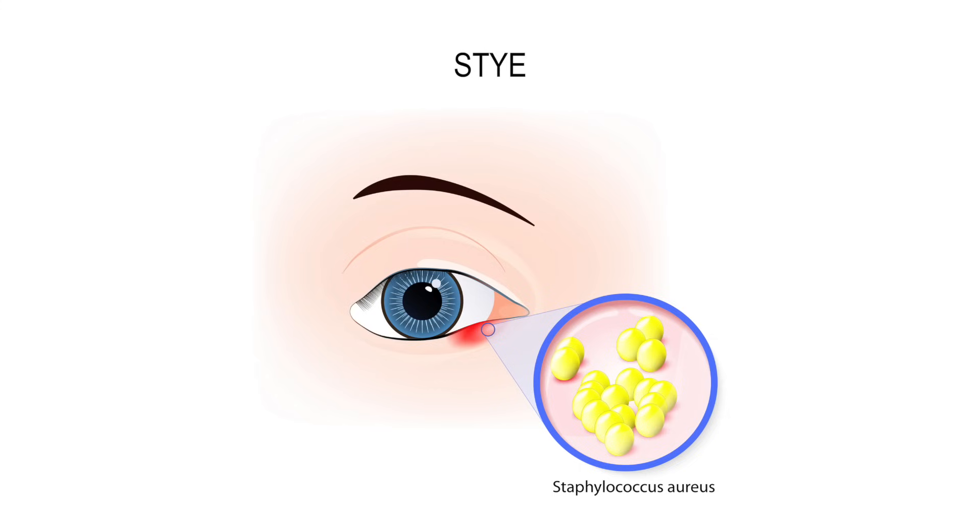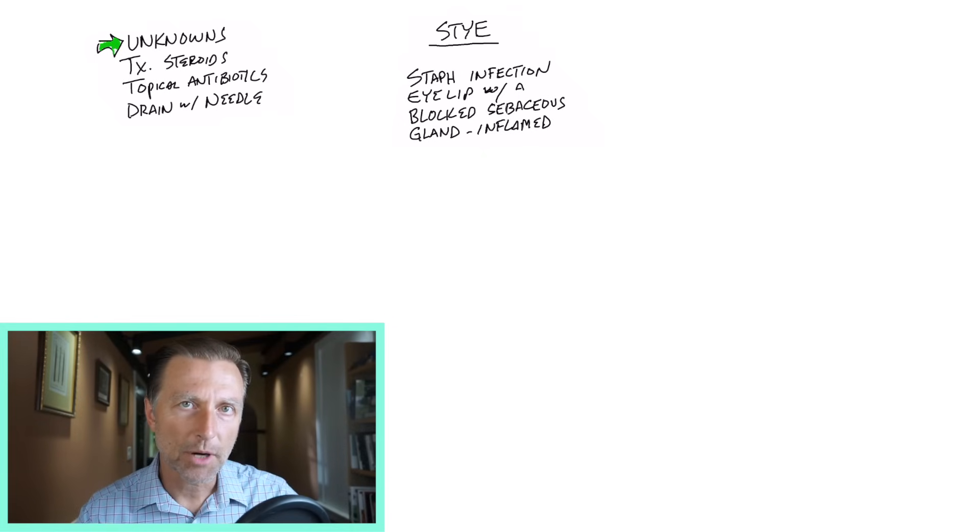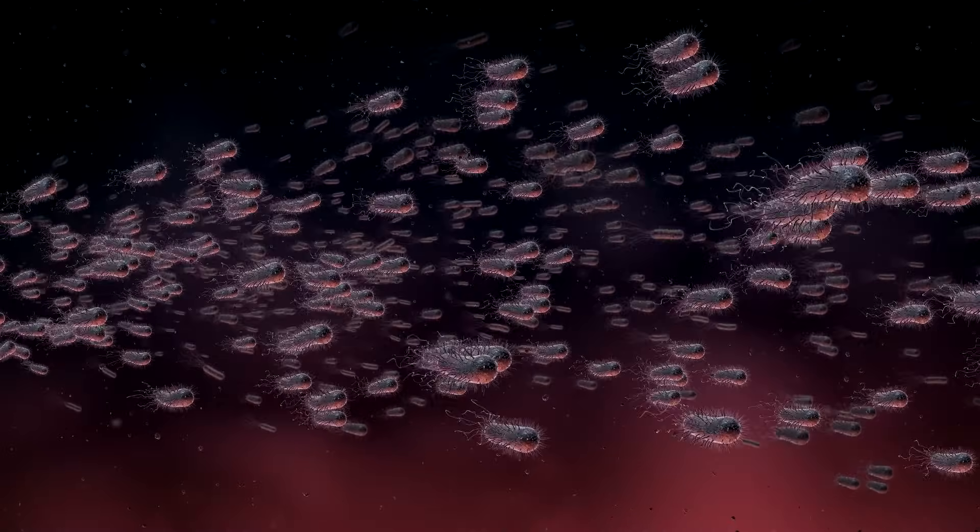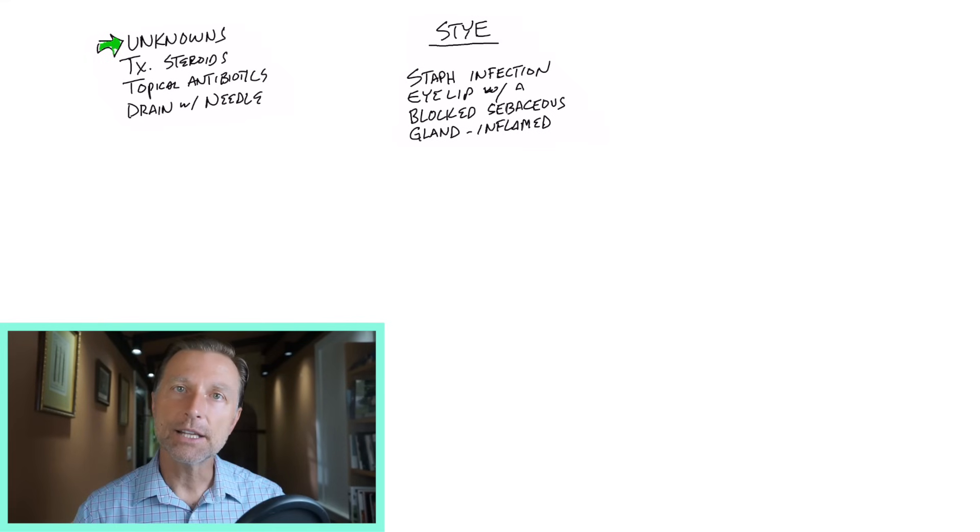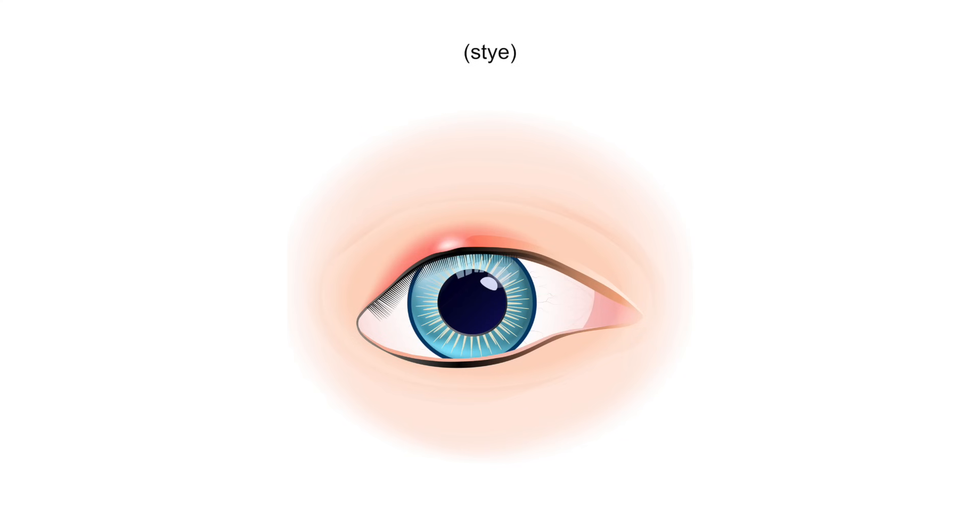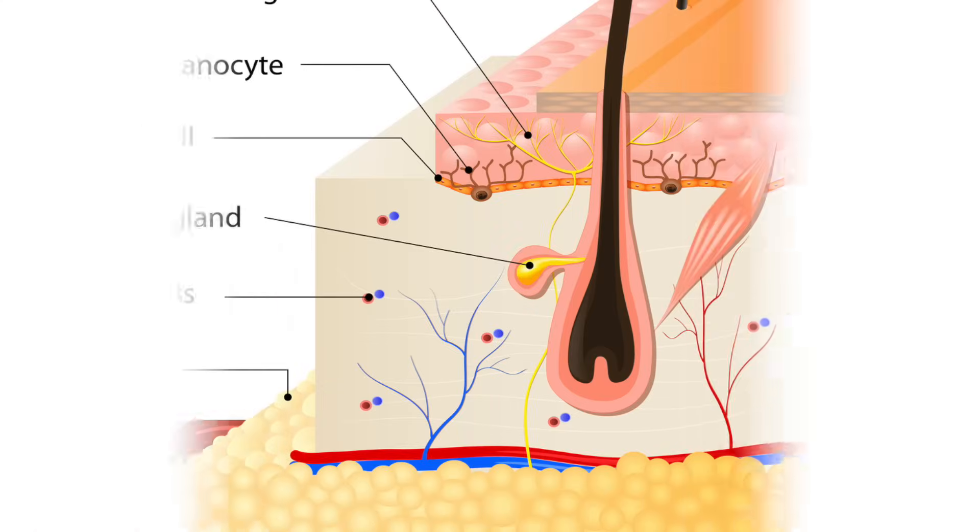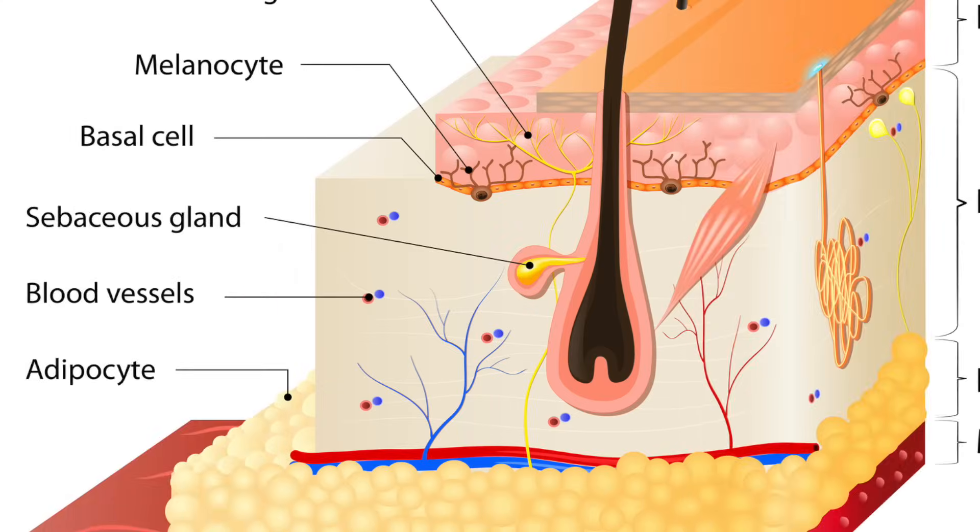But what about these styes that keep coming back over and over? What's really behind this problem and how can we get rid of it once and for all? So we want to ask some really important questions. What blocks a sebaceous gland? Why is this bacteria involved, usually the staph bacteria, in this location of your eyelid and not other places?